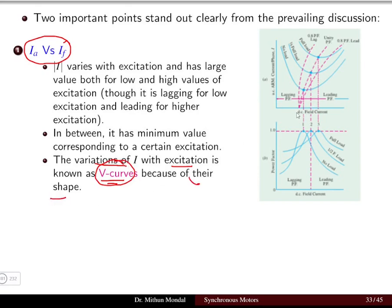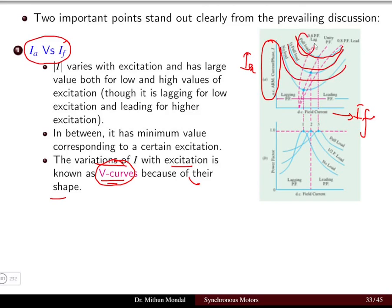If we draw a curve with the Y-axis as armature current and the X-axis as field current, for different loading conditions the shape of the curve is like a V. This is shown for the full load condition, half load condition, and no-load condition. For different loading conditions, the variation of armature current with field current takes the form of a V curve — hence they are known as V curves. At the minimum current point, the left-hand side corresponds to lagging power factor and the right-hand side to leading power factor.